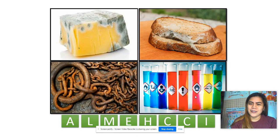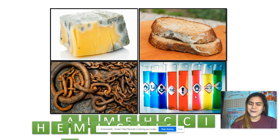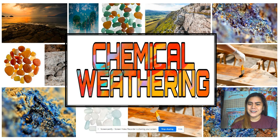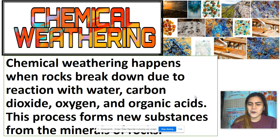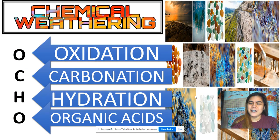Looking at the picture on this slide, the answer is chemical weathering — very good! That leads us into our lesson for today. In chemical weathering, rocks break down due to water, carbon dioxide, oxygen, and other organic acids. This process forms new substances, which is different from physical weathering where no new substances are formed.